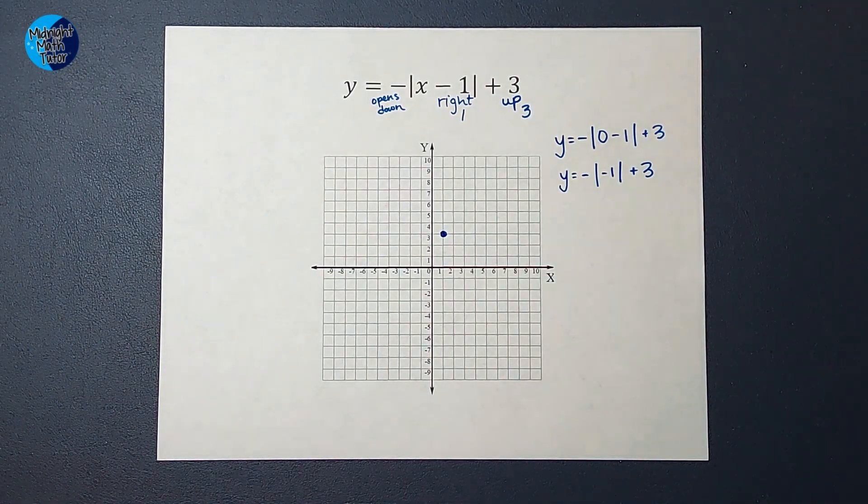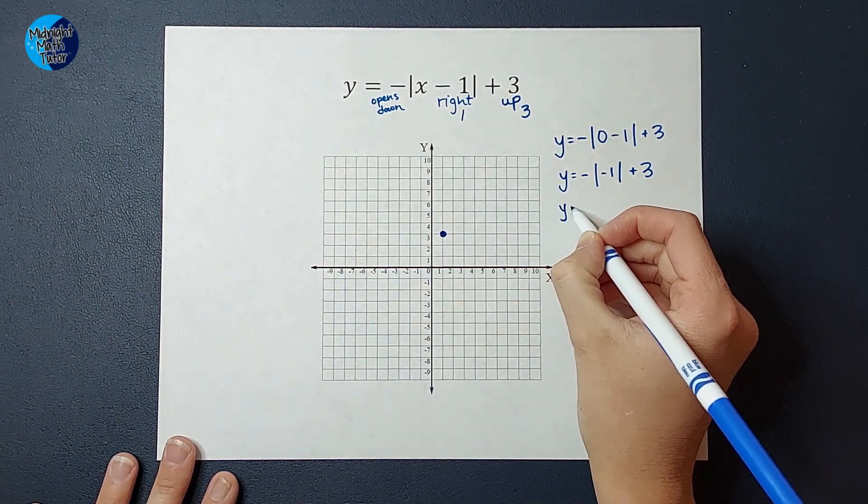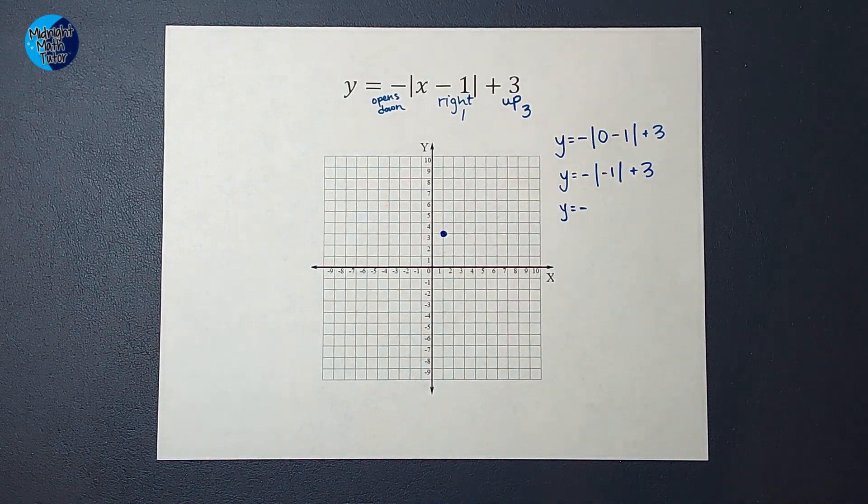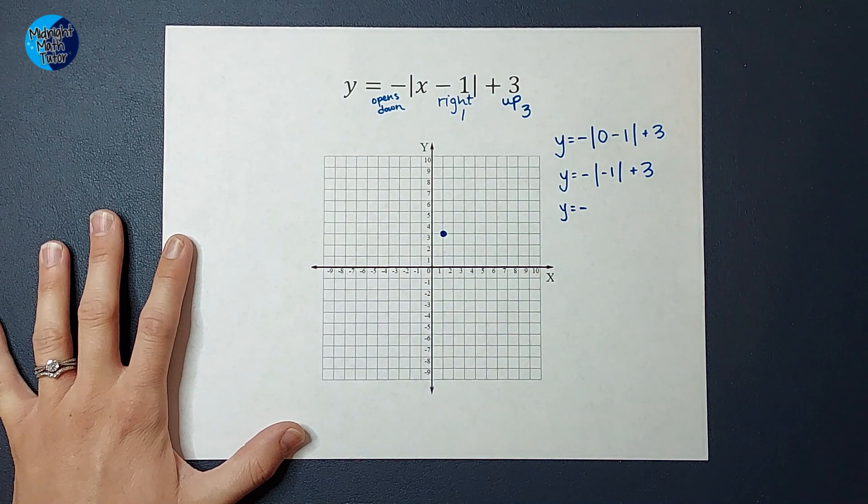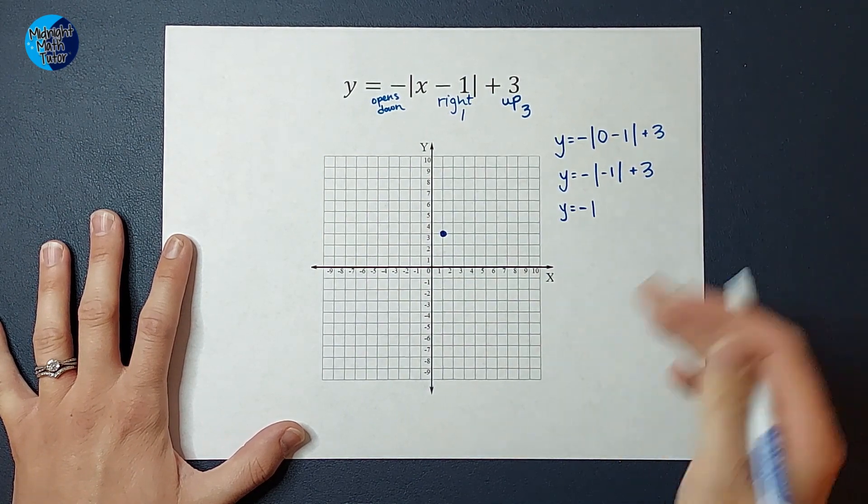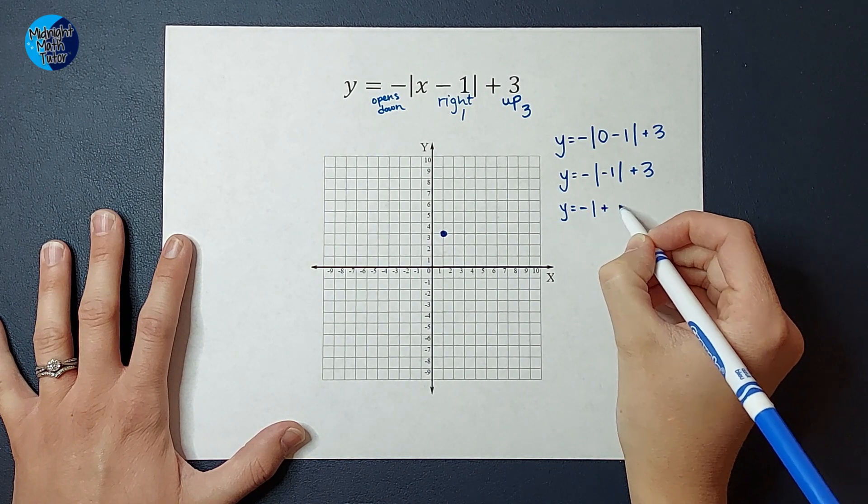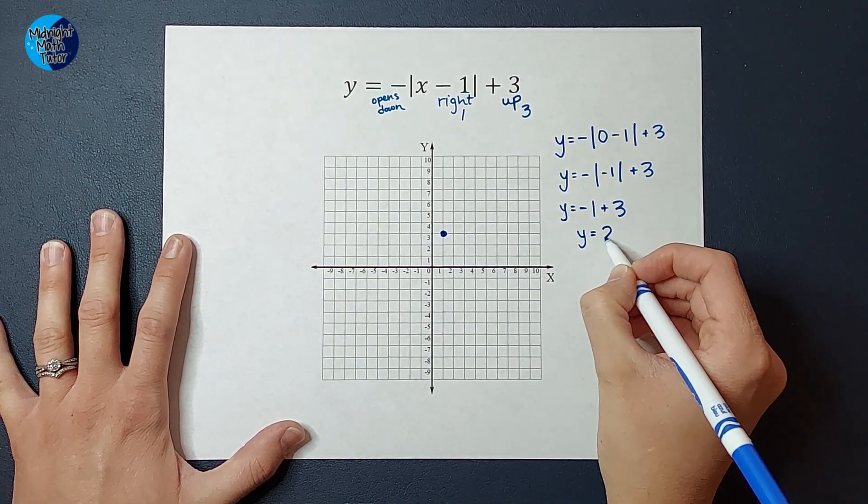Then I've got y equals a negative, we've got the absolute value of negative one plus three. If you need an absolute value review, I'll link a video for you in the corner. But I know that the absolute value of negative one is one, but then we have this negative out here, right, so I'm going to end up having it be a negative one. And then we have plus three, so I end up with y equals two.